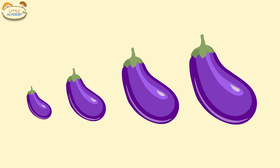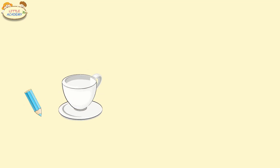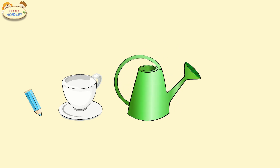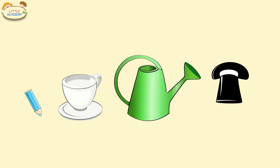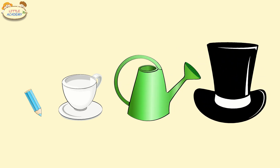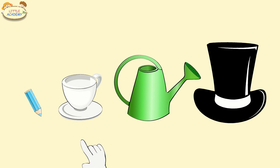Let's do it again. The pencil is small. The cup is larger. The watering can is even larger. The top hat is the largest. This object is small, this one is larger, this one is even larger, and this one is the largest.